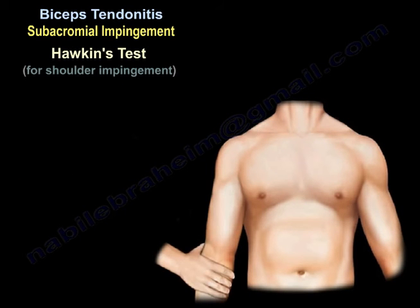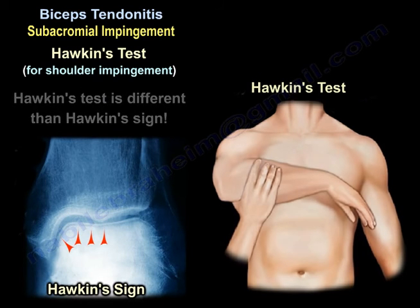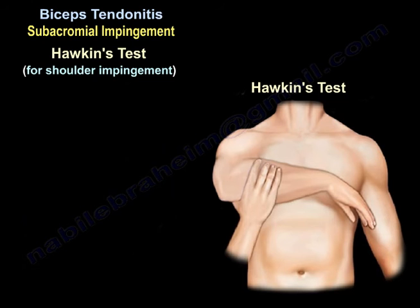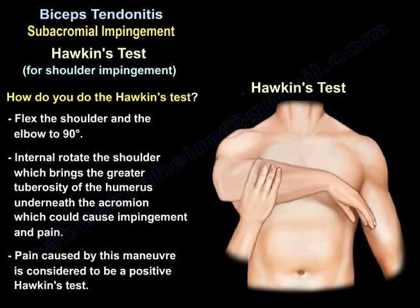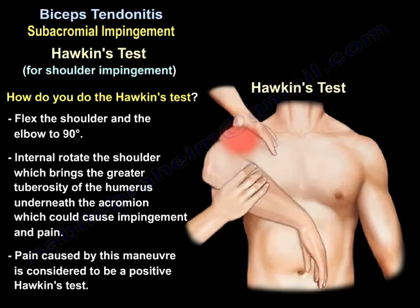How about the Hawkins test for shoulder impingement? The Hawkins test is different from the Hawkins sign — the Hawkins sign refers to vascularity of the talus after a talus neck fracture. To perform the Hawkins test, flex the shoulder and elbow to 90 degrees, then internally rotate the shoulder. This brings the greater tuberosity of the humerus underneath the acromion, which could cause impingement and pain. Pain caused by this maneuver is considered a positive Hawkins test.